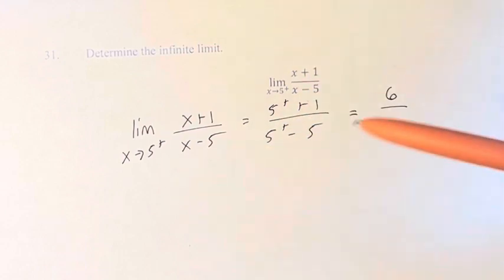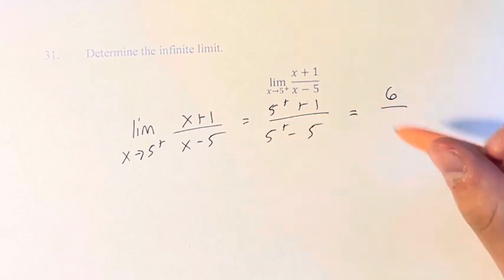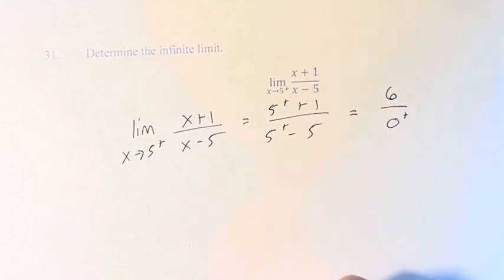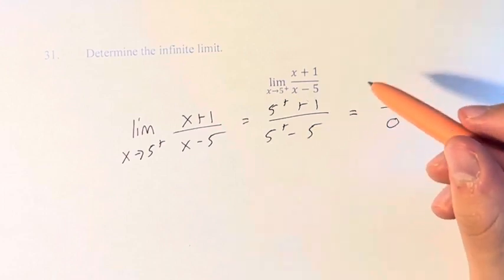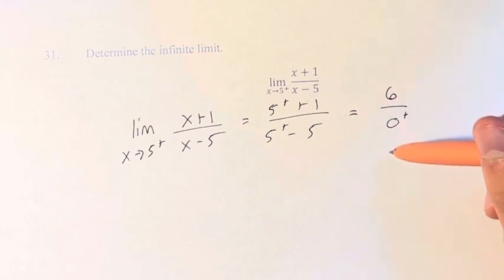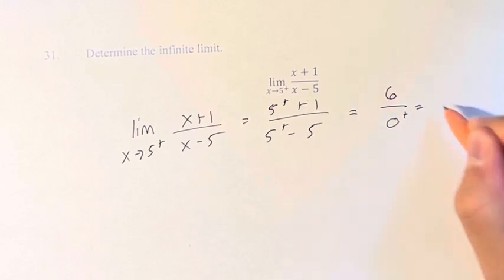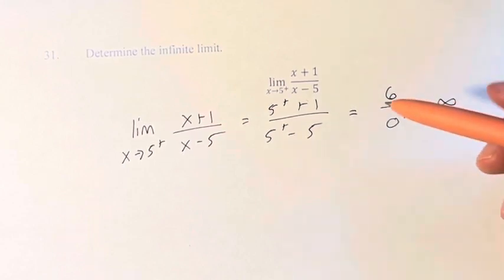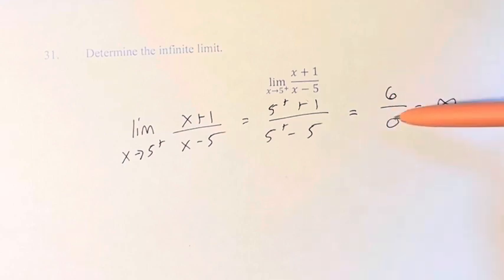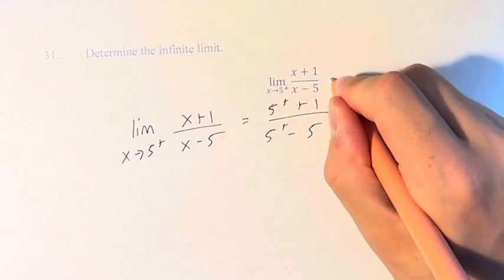However, it's important that as we come closer and closer to 5 from the right, this difference becomes closer and closer to 0 from the right. This is different from 0 to the left, because 0 to the left is negative numbers. So 6 divided by 0 to the right is equal to infinity, because any number divided by numbers that are approaching 0 is going to go off to infinity or negative infinity. Since we have a positive number divided by a positive number, it's going off to positive infinity. Therefore, the limit is equal to infinity.